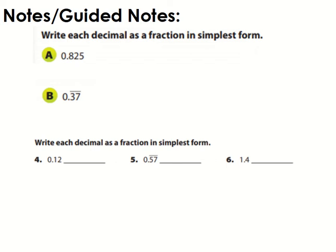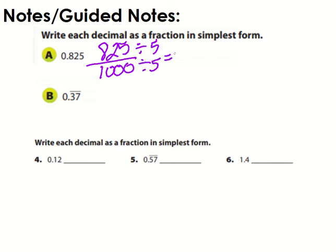The first thing we're going to do is change decimals into fractions. When you have a terminating decimal, like example A, you first read the decimal correctly. This one is 825 thousandths, so the way I read it is exactly the way I would write it: 825 over 1000. Notice it says in simplest form, so we're going to reduce this as much as we possibly can. We can reduce it by five.